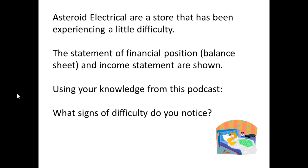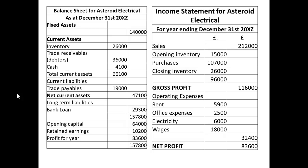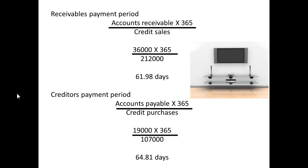Now let's look at a contrasting situation with Asteroid Electrical, a store experiencing some difficulty. From their statement of financial position and income statements: trade receivables are 36,000, sales are 212,000, trade payables are 19,000, and purchases are 107,000. The receivables payment period comes to 61.9 days — it's taking 62 days to get money back from customers. The creditors payment period is 64.81 days — almost 65 days to pay creditors. If terms are 30 days net, creditors are probably not happy, and the business could be paying interest on money owed.